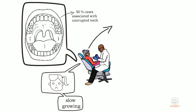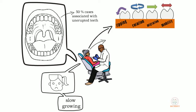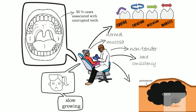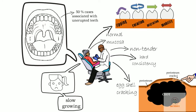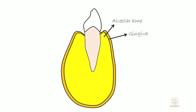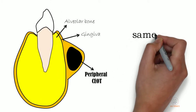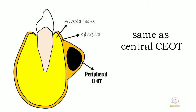Adjacent teeth may show tipping, rotation, migration, or mobility. The overlying mucosa shows no changes in colour. On palpation, the swelling is not tender and has a bony hard consistency. Large lesions may show eggshell cracking. Rarely, peripheral CEOTs are seen extra-osseously in the gingiva with similar clinical and histological presentations, except for their location.